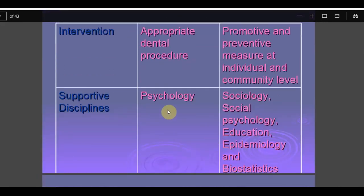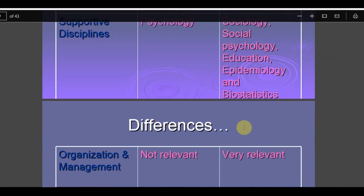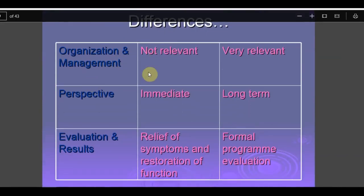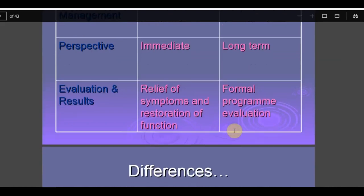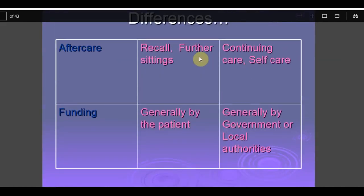Supportive disciplines for individual care include psychology to understand and manage the patient, but in public health it is much more complex — requiring sociology, social psychology, education, epidemiology, and biostatistics. Organization and management is not very relevant for individual patient care but is very relevant for community programs. Perspective is immediate for the individual patient but takes a very long time in a community program. Evaluation for the individual is relief of symptoms and restoration of function, but in public health it is formal program evaluation.